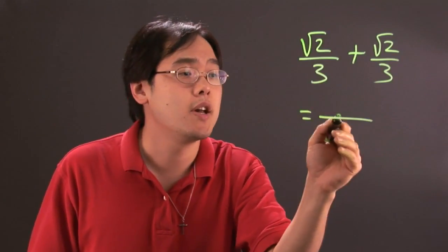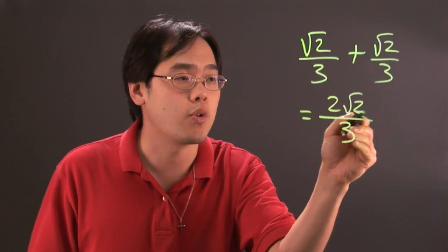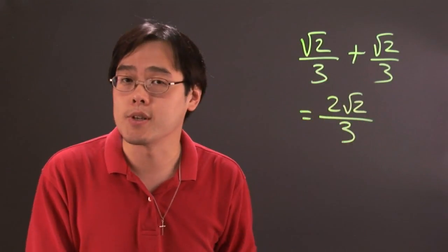So to combine these, the denominator is 3 and square root of 2 plus square root of 2 is 2 square root of 2. That's a pretty simple example.